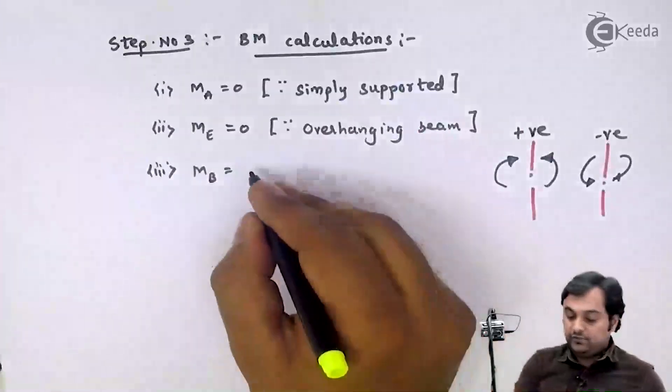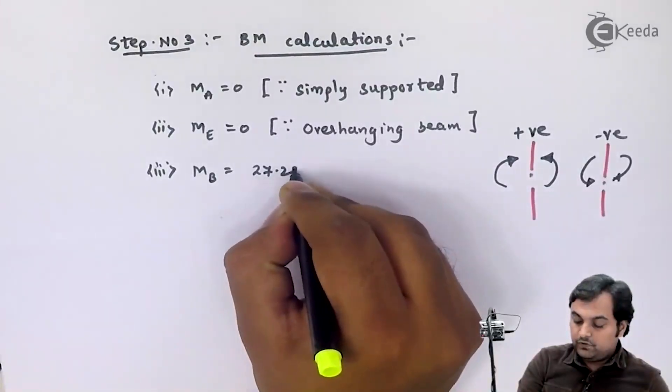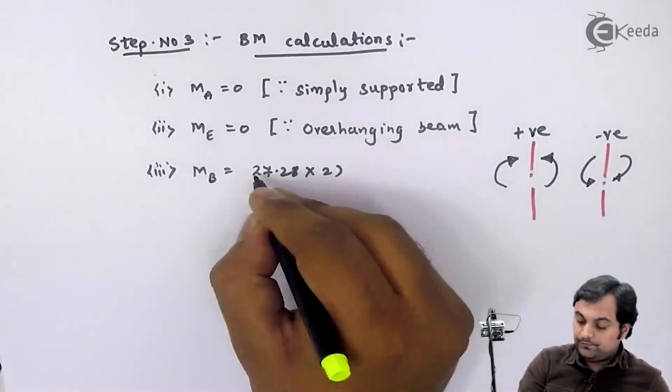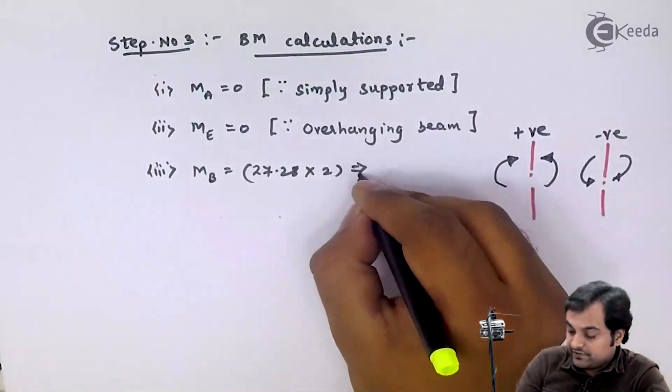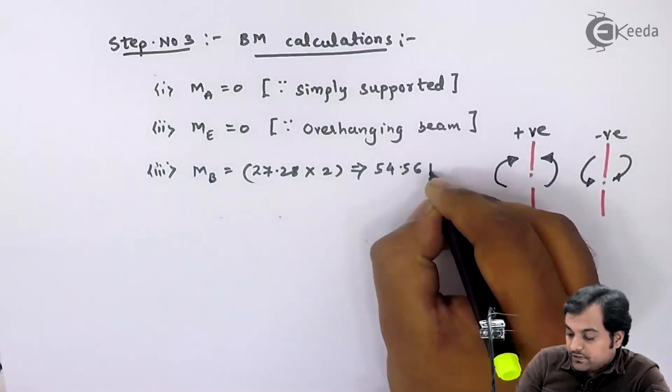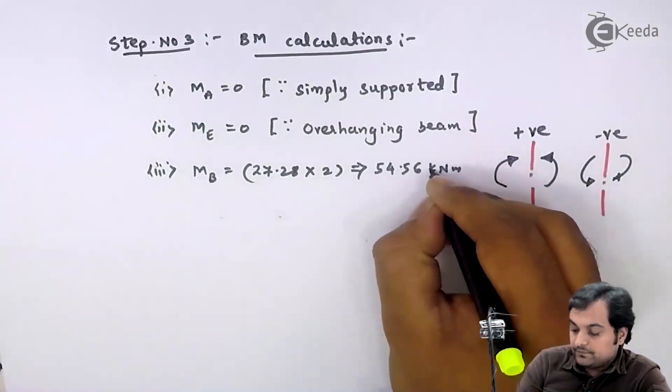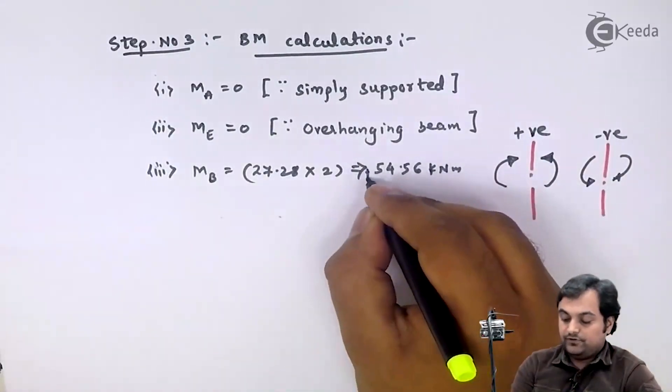So here I have 27.28 into 2 that will give me the value as 54.56 kilonewton meter. This is a positive value.